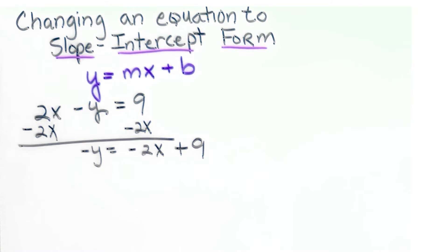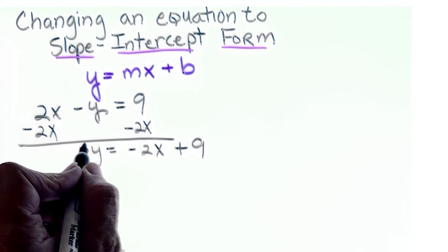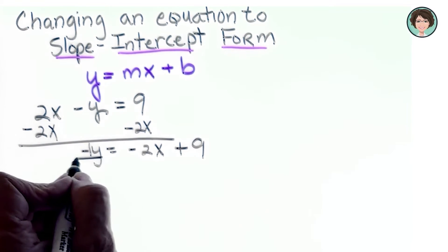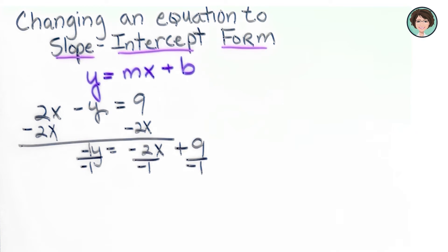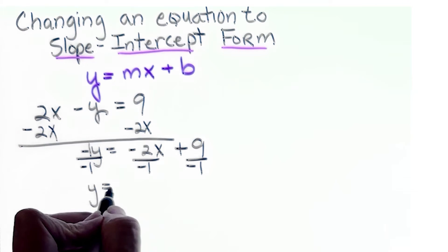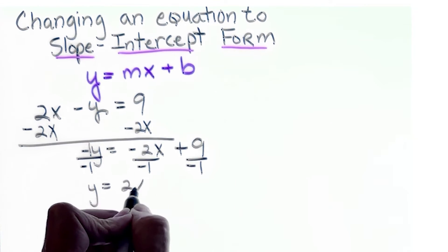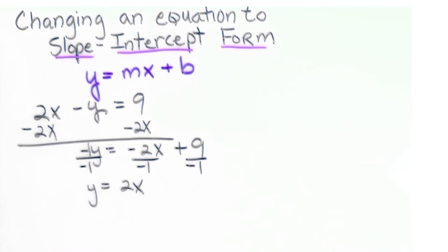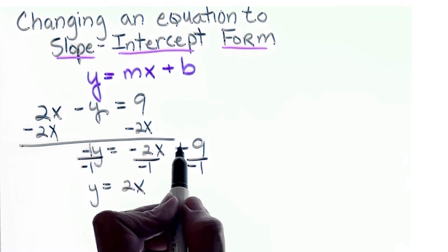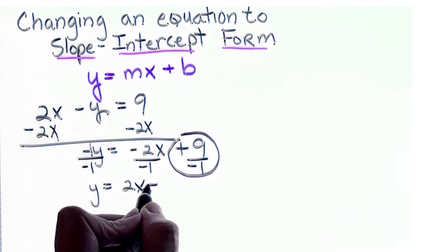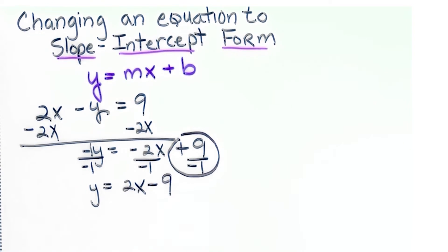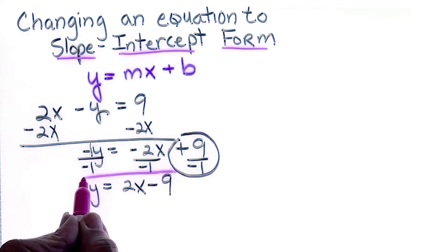We must have just y equals mx plus b, so because there's a negative y there's an imaginary 1, and I divide everything by negative 1. I end up with y equals 2x — dividing a negative by a negative makes it positive 2x — and the plus 9 divided by negative 1 becomes minus 9. The equation in slope-intercept form is y equals 2x minus 9.